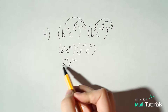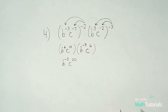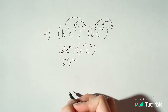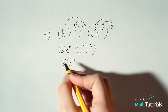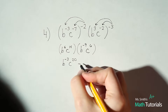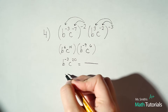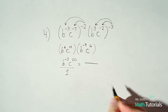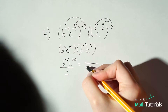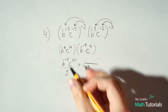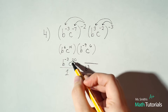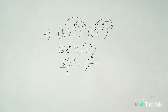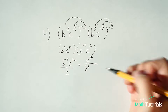We can't have a negative exponent, so we need to cross the line, change the sign. I've done everything else I can do — now I'll worry about that negative exponent. This b to the negative 3 is on top with an understood over 1, so we want to move it to the bottom: b to the positive 3. My c to the 20th has a positive exponent, so it can stay right where it is — c to the 20th. So this would be our final answer.